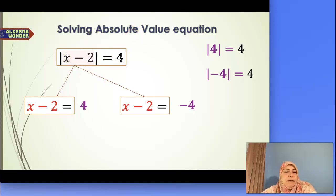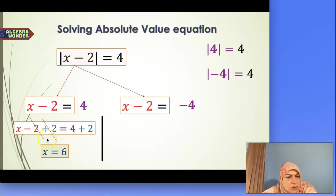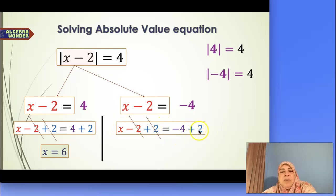So we solve each equation separately. For x minus 2 equals 4, I use the inverse property of addition and add 2 to both sides, giving x equals 6. For x minus 2 equals negative 4, I again add 2 to both sides, giving x equals negative 4 plus 2, which is negative 2. Both answers match what we found using the distance interpretation.